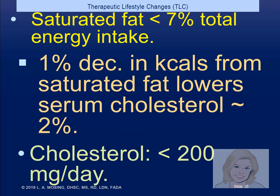The therapeutic lifestyle change (TLC) diet, along with the DASH diet — dietary approaches to stop hypertension — are the two best meal plans for our patients. If a patient needs to reduce their saturated fat to less than 7% of energy, they'll eat more plant-centered diet. A 1% decrease in calories from saturated fat will reduce serum cholesterol by 2% — a good return on investment.